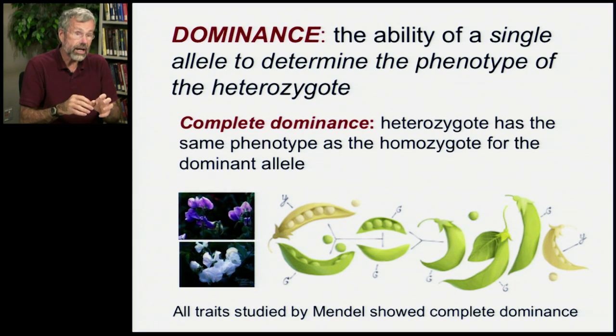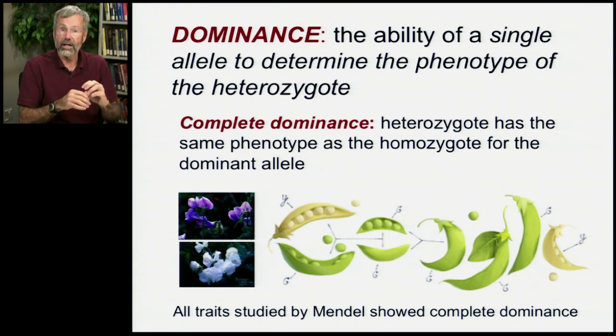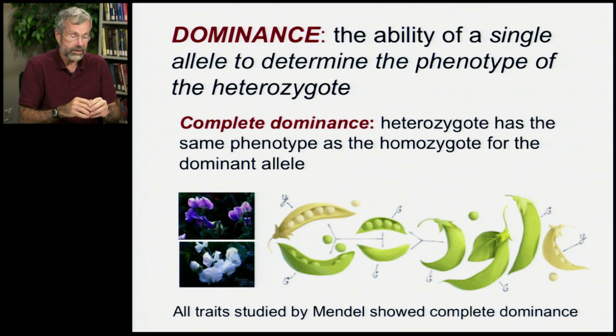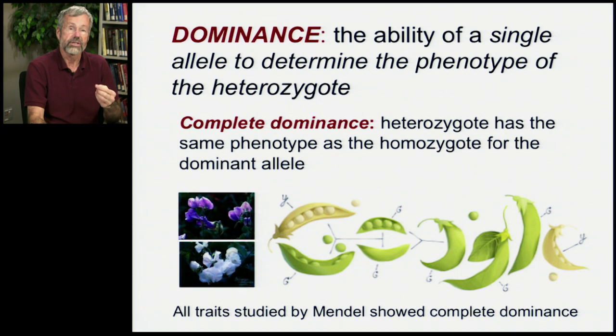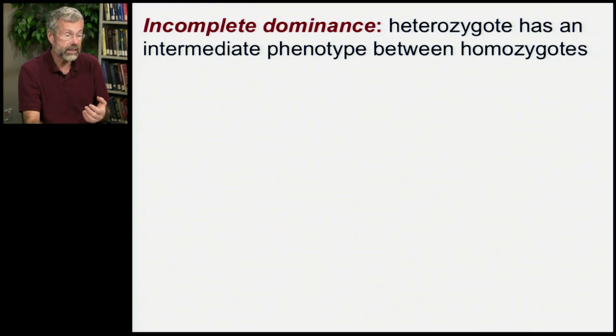As it turns out, all the traits that Mendel studied — peapod shape, color, colors of the peas themselves — these showed complete dominance. So the heterozygotes look the same as the homozygote with the dominant allele. Not all traits show complete dominance. Others show what's called incomplete dominance, where the heterozygote has an intermediate phenotype between the two homozygotes.